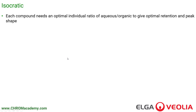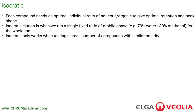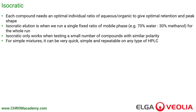Isocratic analysis means each compound needs an optimal individual ratio of aqueous and organic in the mobile phase to give optimal retention time and peak shape. We have a tailored ratio of methanol versus water to get the analyte off the column within a sensible period of time. Isocratic elution is when we run a fixed ratio of mobile phase — for example, 70% water and 30% methanol for the entire analysis. Isocratic really only works when we test small numbers of compounds with similar polarity. For simple mixtures it can be very quick, simple, and repeatable.